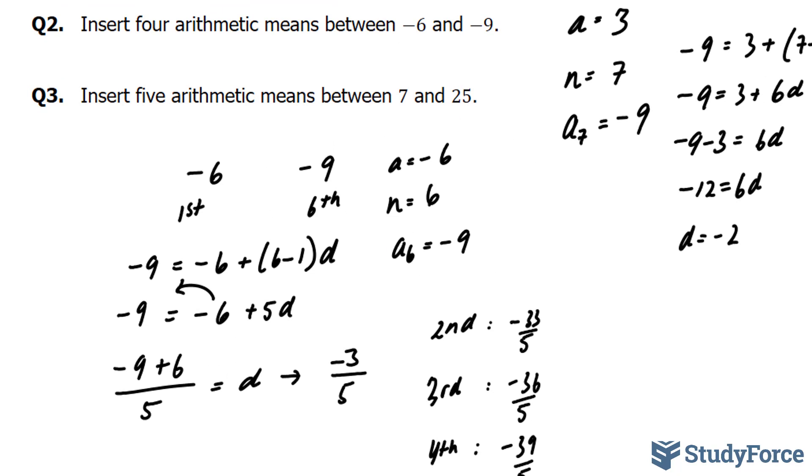And finally, in question 3, we'll do the same thing. This time, they want us to insert 5 means between 7 and 25. I'm expecting my difference here to be positive. This is my first. Adding 5 observations to the first gives us 6 in total, and this will be our 7th observation.